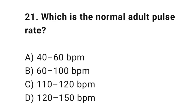Question number twenty-one: what is the normal adult pulse rate? The right answer is B — 60 to 100 bpm.